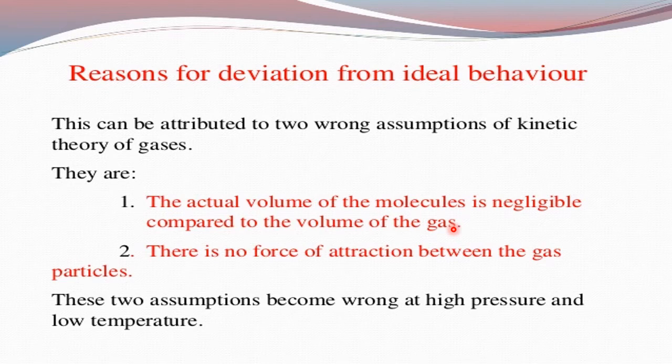In the case of an ideal gas, molecules are treated as point masses with negligible size. If you put all ideal gas molecules in one corner of the container, they occupy a negligible space compared to the container volume. But for real gases, molecules have significant size. When placed in one corner, they occupy a noticeable volume — the volume of the molecules is not negligible compared to the container. This is a faulty assumption when applied to real gases.